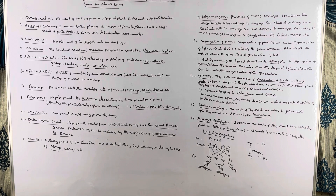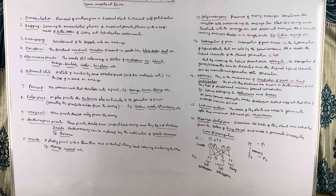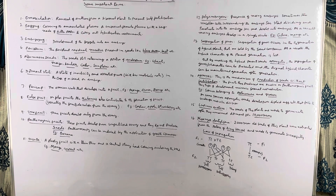Pericarp is the ovarian wall that develops into a fruit. Examples: mango, guava, orange, etc. True fruit: when the ovarian wall develops into a fruit, such fruits are known as true fruits.